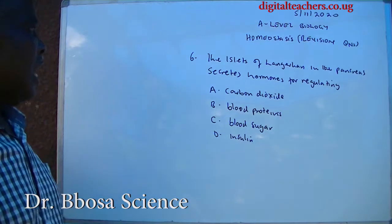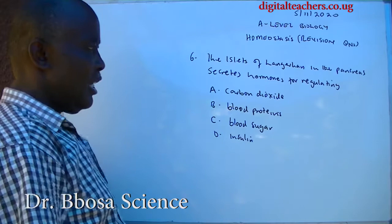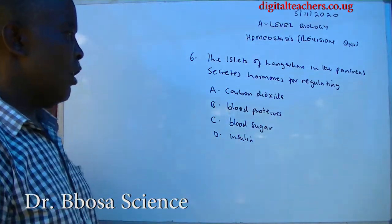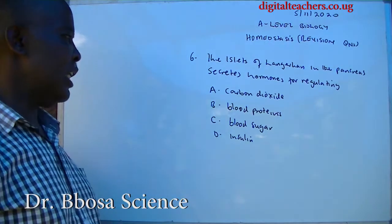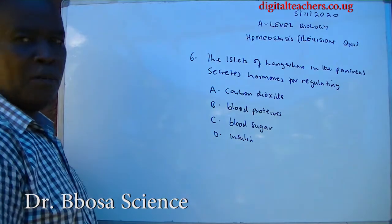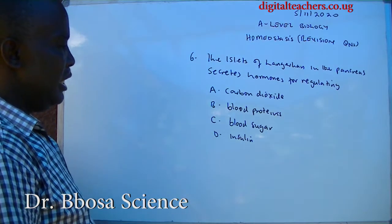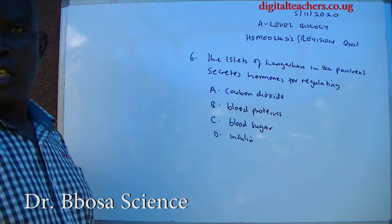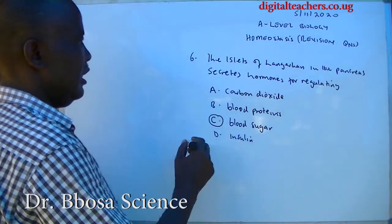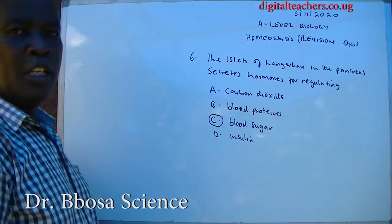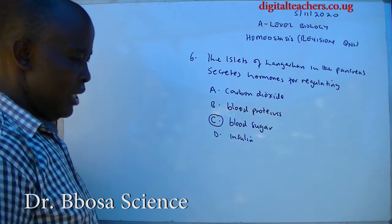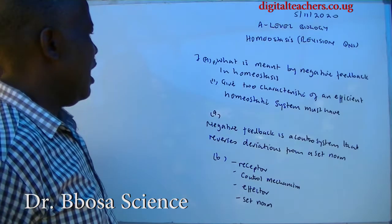Number six: the islets of Langerhans in the pancreas secrete hormones for regulating: A. Carbon dioxide, B. Blood proteins, C. Blood sugar, D. Insulin. The answer is C: Blood sugar. They produce insulin and glucagon to regulate blood sugar.